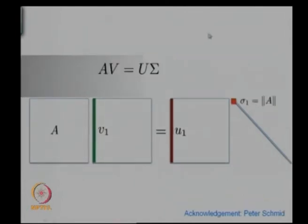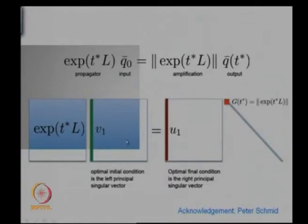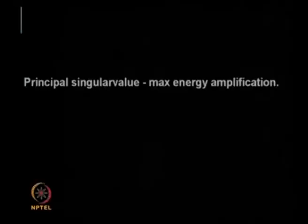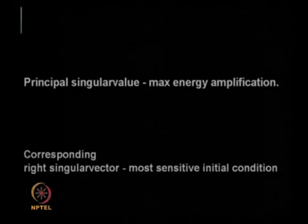If you replace this A with the evolution operator e to the power Lt — in our norm, our L was minus of this. This operates on v1 and you get u1 times sigma, which is the norm. So you have the optimum initial condition — the right singular vector — and you get it amplified and you get the output direction. The principal singular value shows the maximum energy amplification and the corresponding right singular vector shows the most sensitive initial condition.